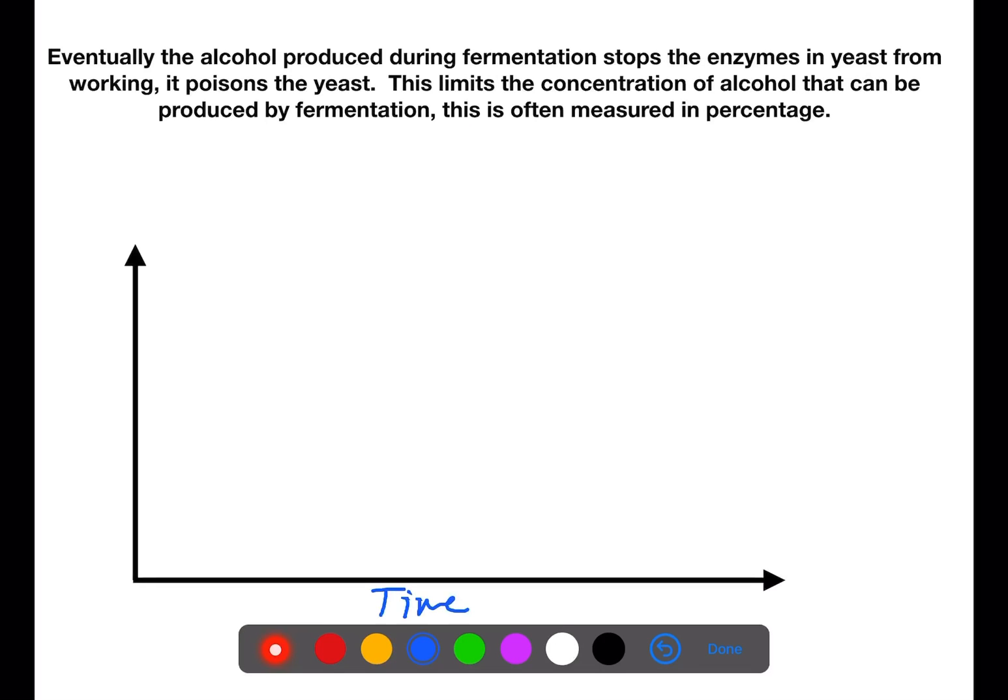Eventually, the alcohol produced during fermentation stops the enzymes in yeast from working. It poisons the yeast. This limits the concentration of alcohol that can be produced by fermentation. This is often measured as a percentage.